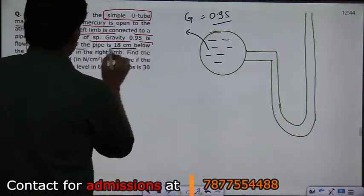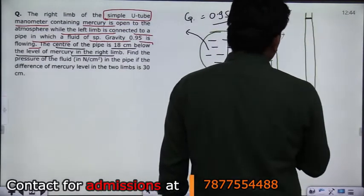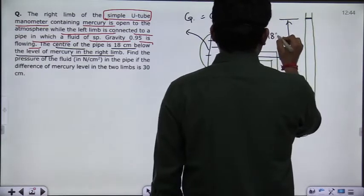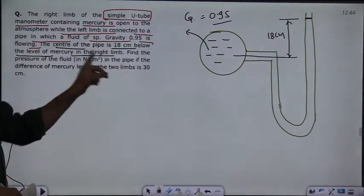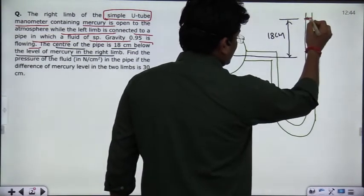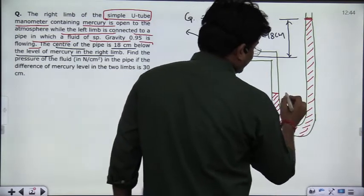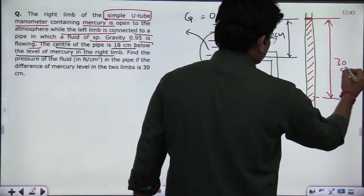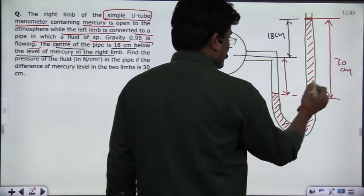The center of the pipe is 18 cm below the level of the mercury in the right limb. This is your right limb and this is your left limb. From the right limb, this distance is given as 18 cm below. The difference of the mercury level in the two limbs is 30 cm. So from the center of the pipe to the mercury level in the left limb, it will be 30 minus 18, which is 12 cm.